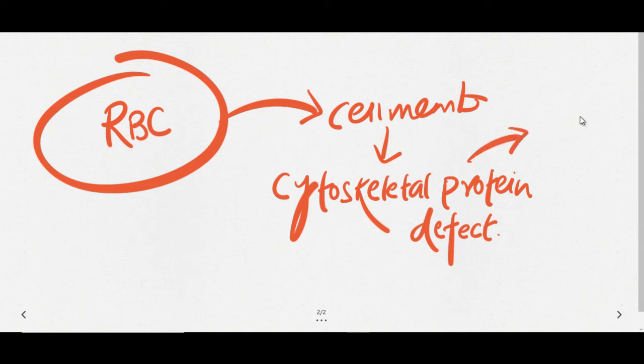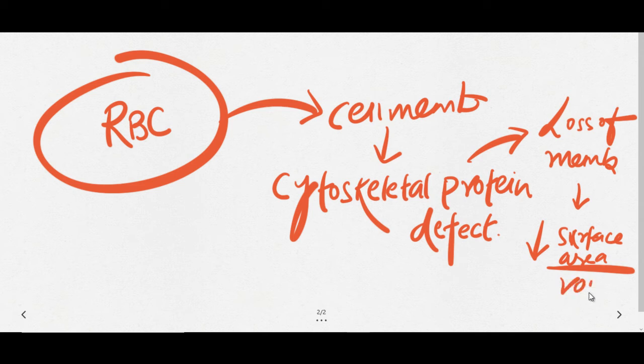This loss of cell membrane results in a low surface area to volume ratio, making the RBC more spherical. This is known as spherocytosis. The normal RBC shape is biconcave.